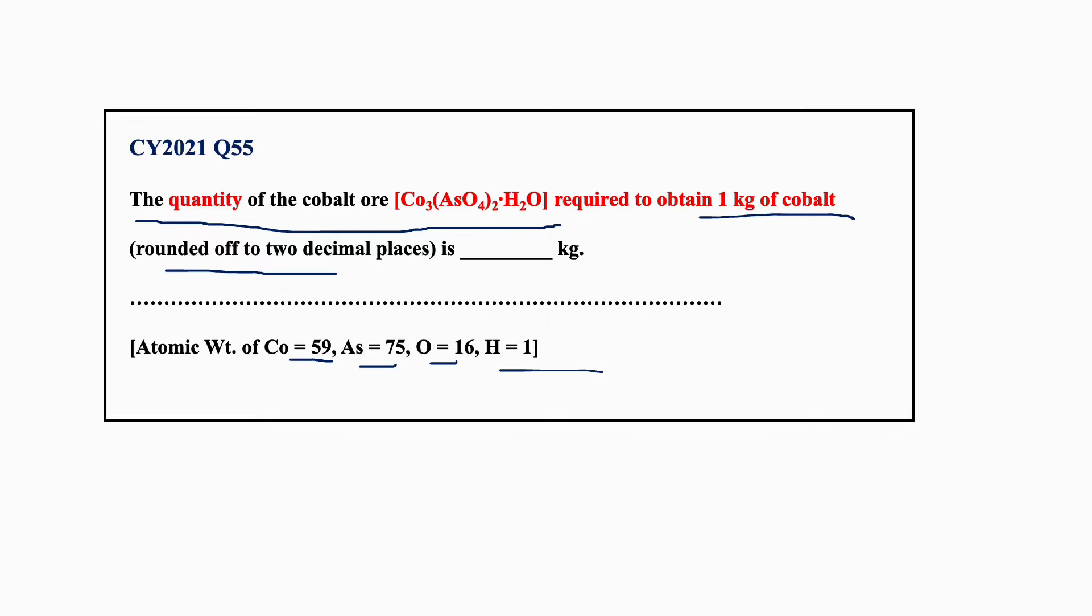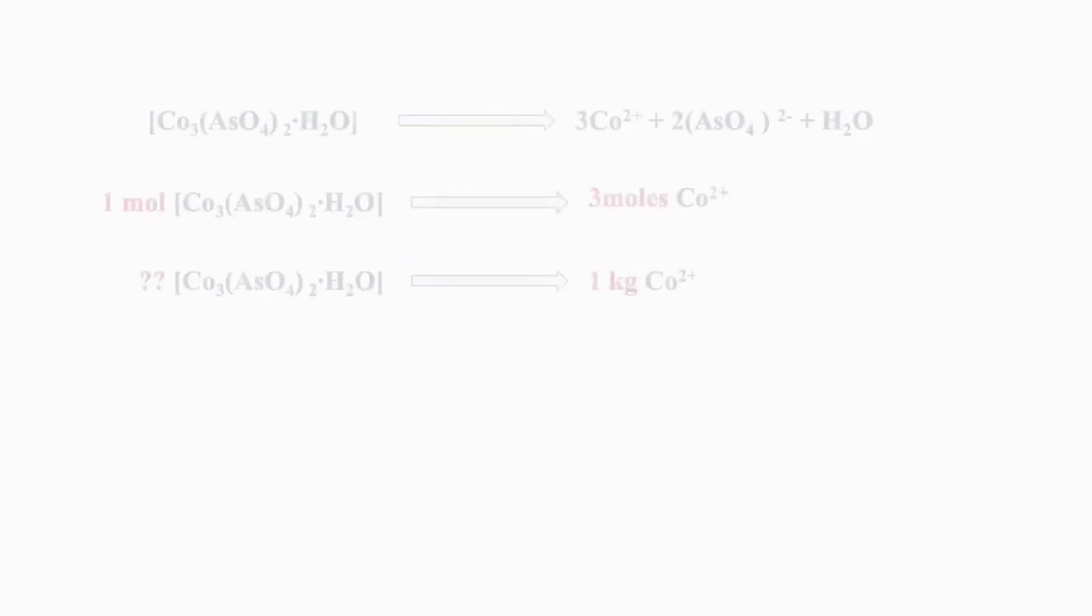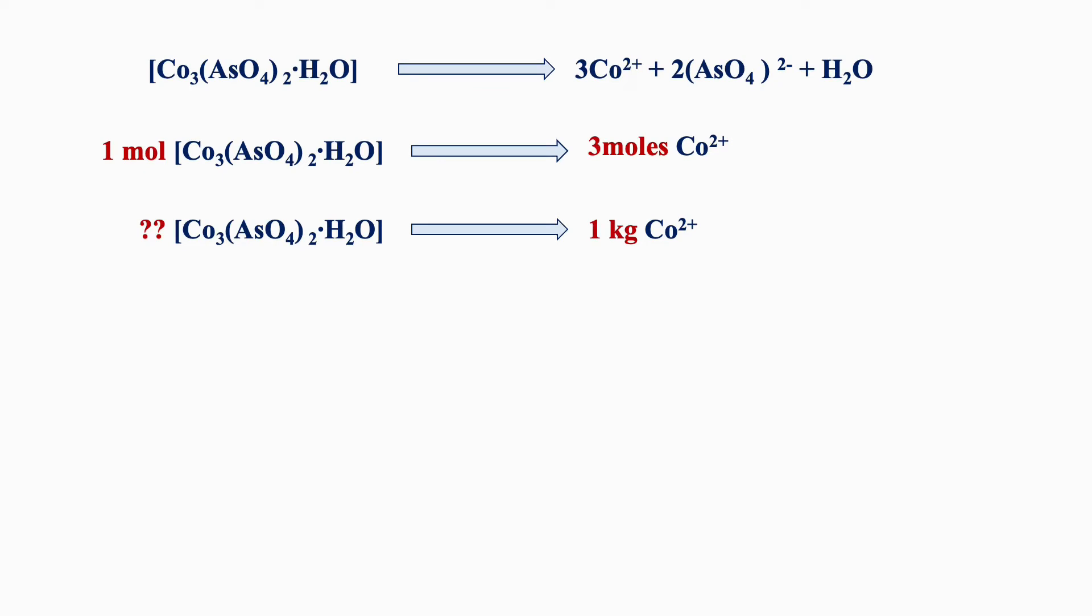Let's see how to solve this problem. First, we can write the equation corresponding to the separation of cobalt from cobalt ore: Co₃(AsO₄)₂·H₂O separates into 3Co²⁺ + 2(AsO₄)²⁻ + H₂O. This suggests that from 1 mole of this cobalt ore, we are getting 3 moles of Co²⁺.